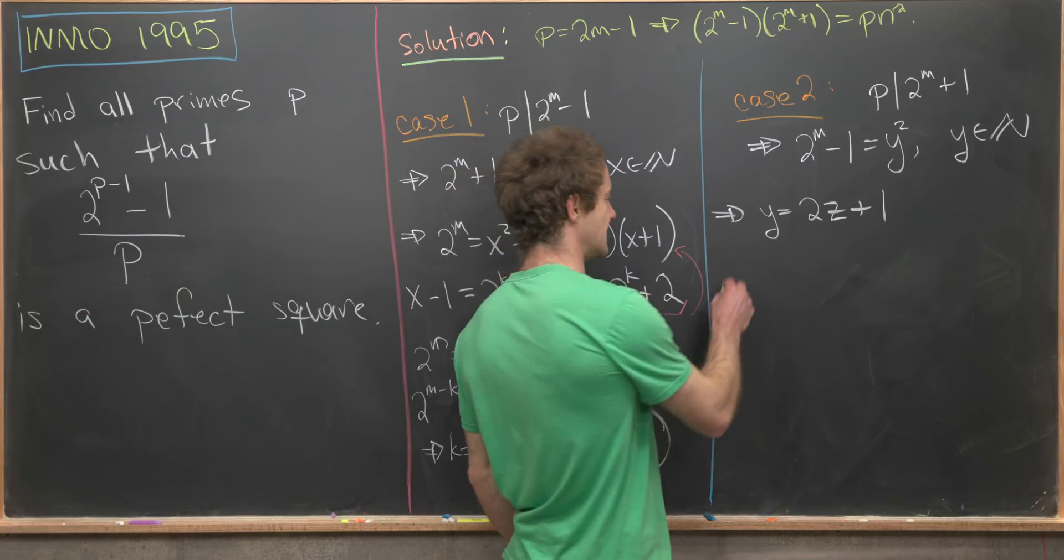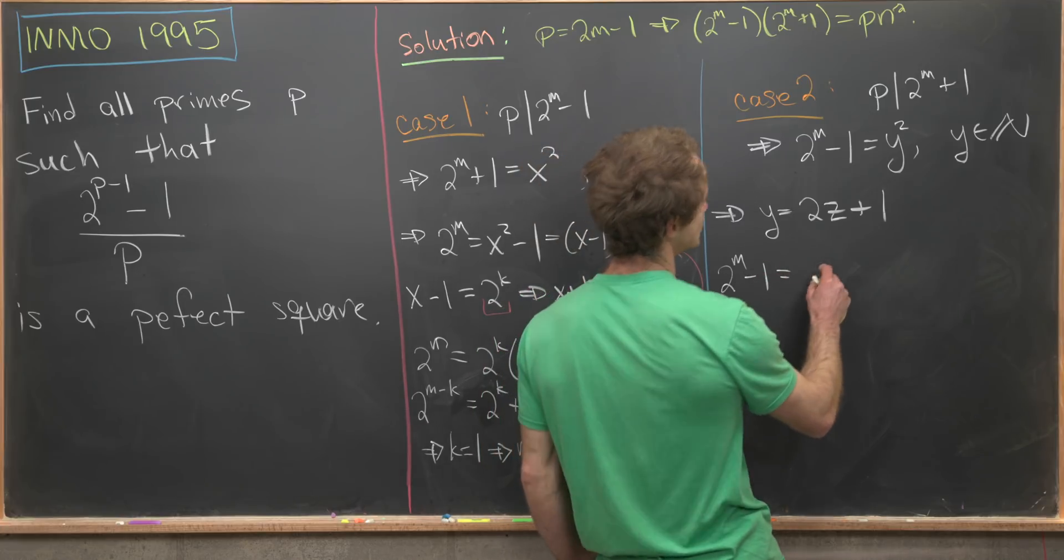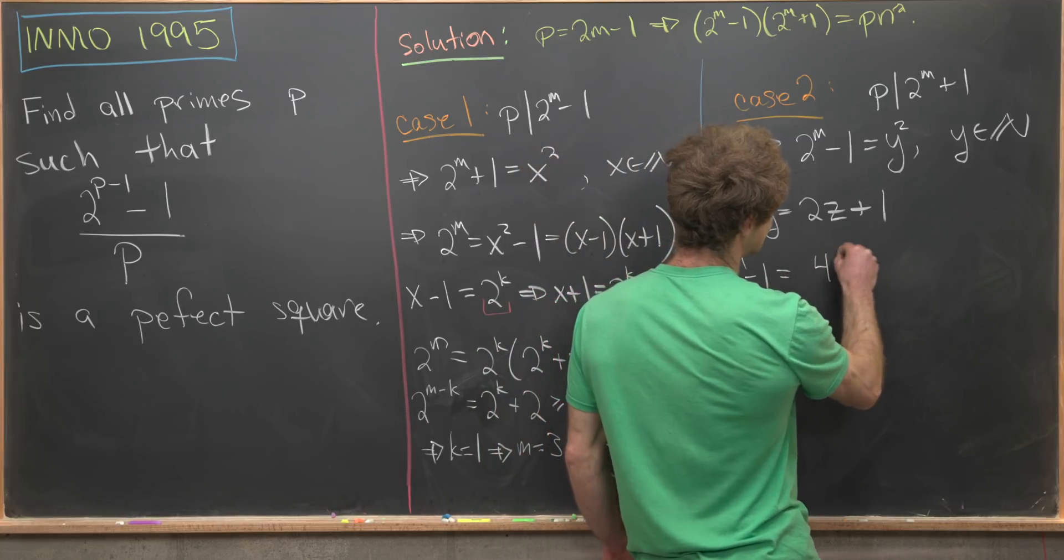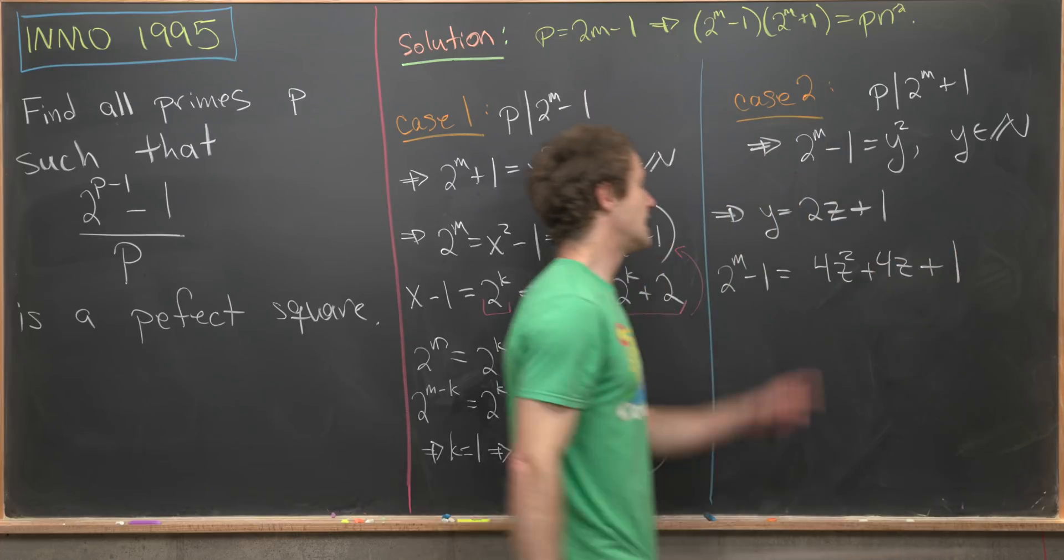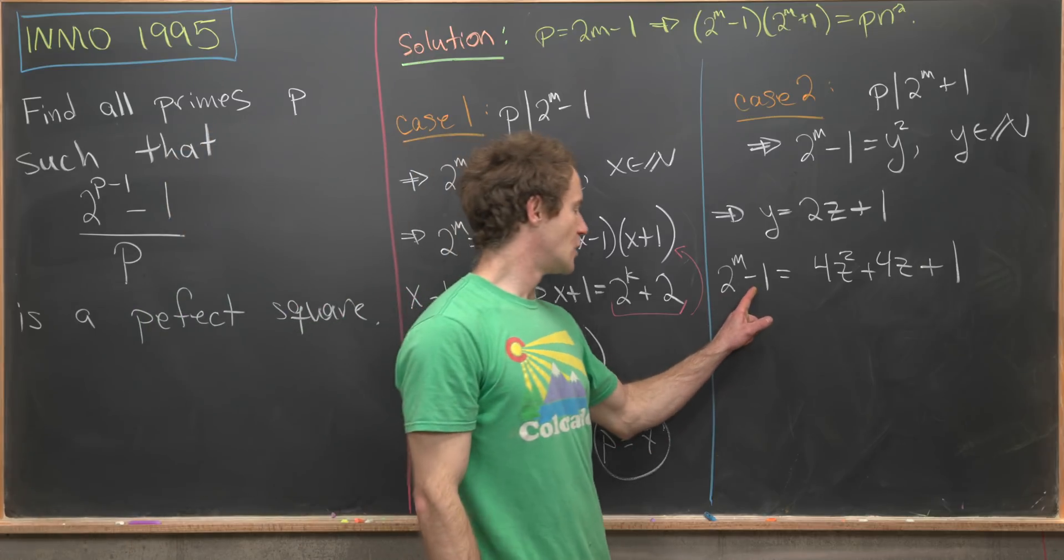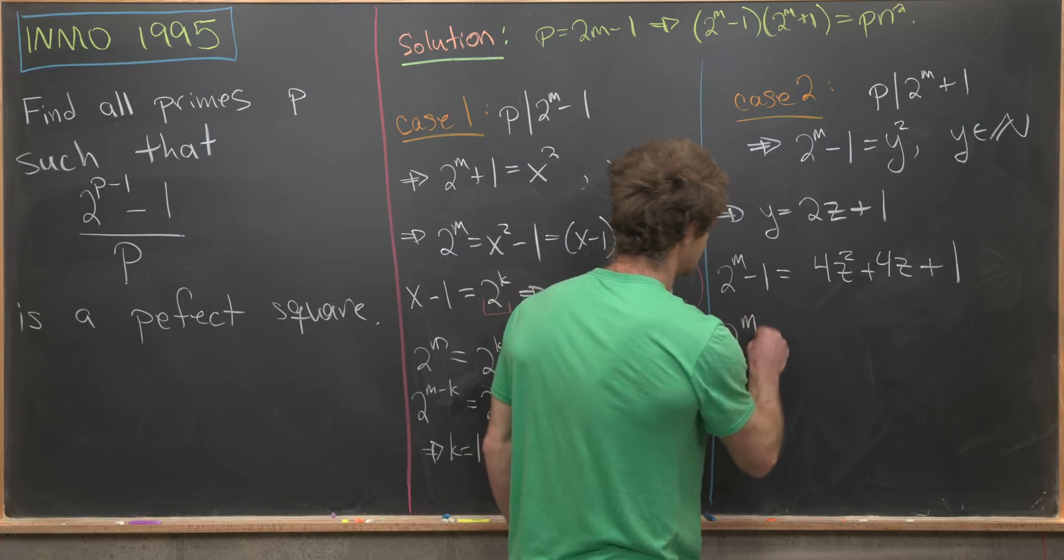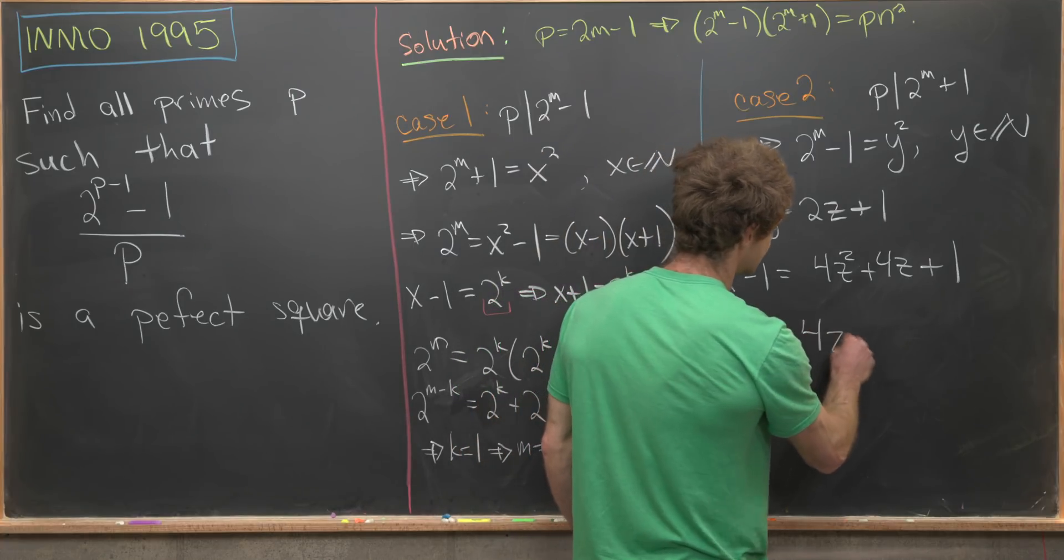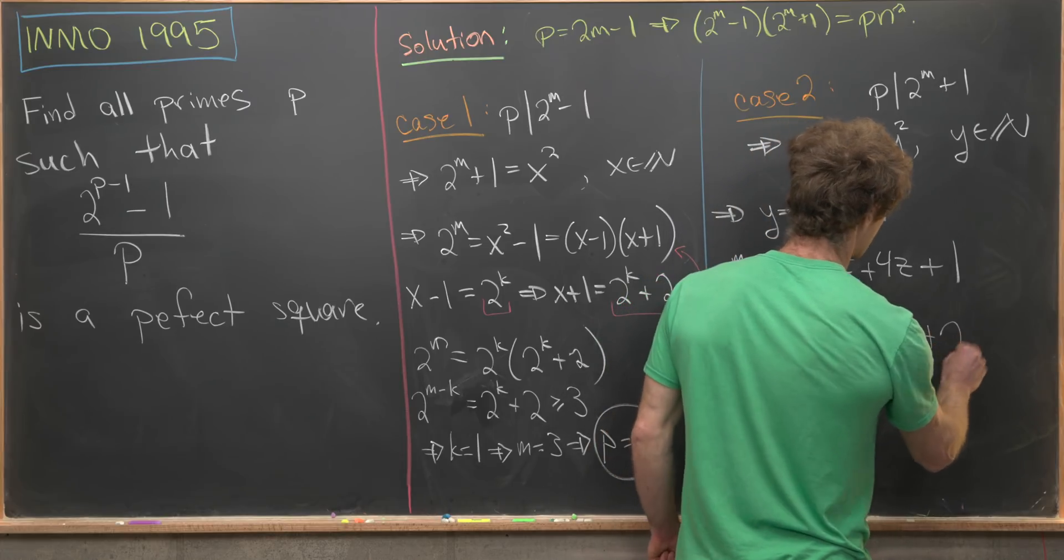Now throwing that into the above equation, we have 2^m - 1 = 4z^2 + 4z + 1. That's what we get if we square the y out. Now next up, we can add 1 to both sides of this equation. And we'll see that 2^m = 4z^2 + 4z + 2.